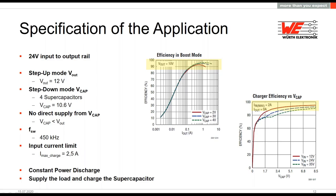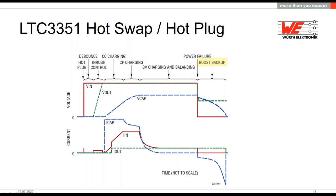To show we operate in a high efficiency region, I've placed diagrams from the IC manufacturer's datasheet. The left diagram shows the efficiency in boost mode — 12V output at around 2.5A current. The charge efficiency in the right picture is also quite high, confirming we have a high efficiency system.